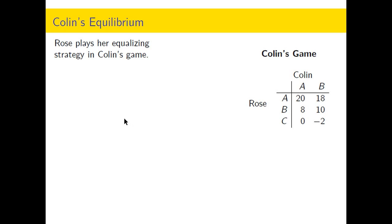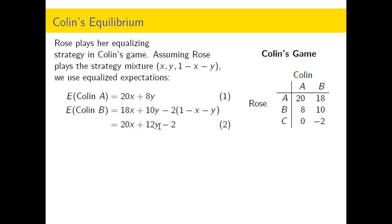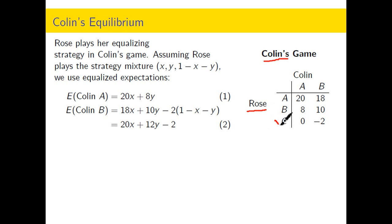Rose plays her equalizing strategy — not her best strategy — in Colin's game. This is a non-zero sum game with dominance. In Colin's game, Colin is the maximizing player and Rose is the minimizing player. For the minimizing player, strategy C actually looks quite good, so this is the strategy that appears dominated when you look at the calculations.